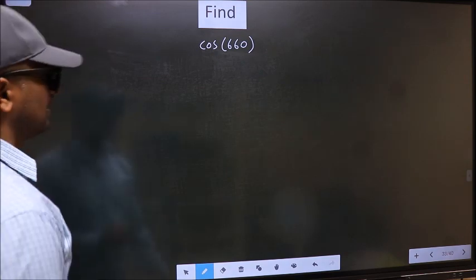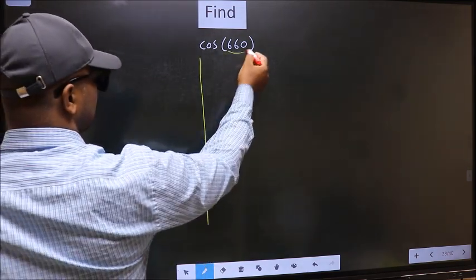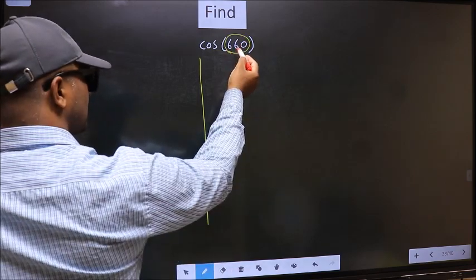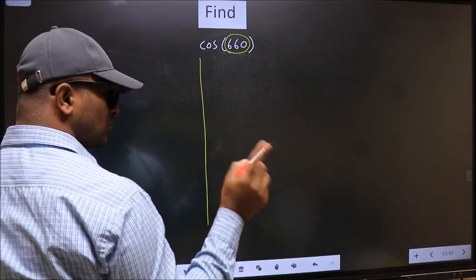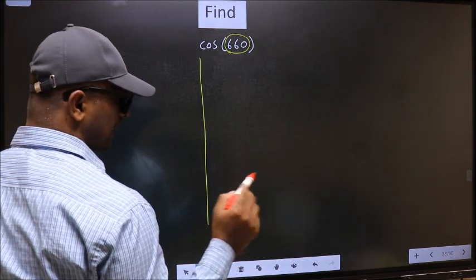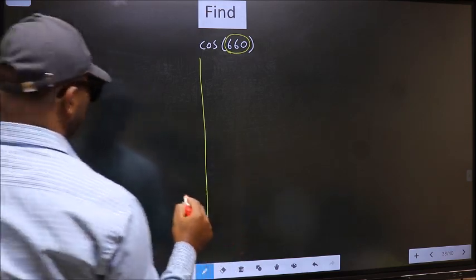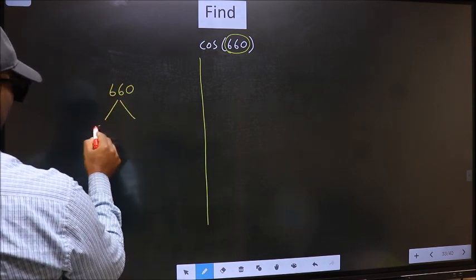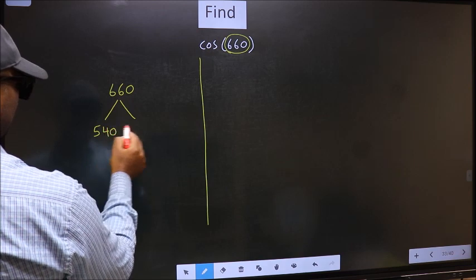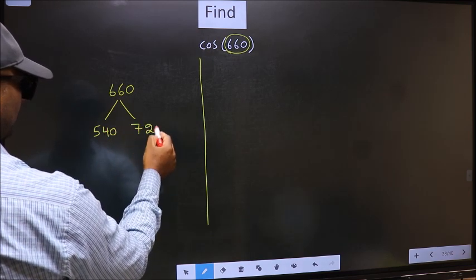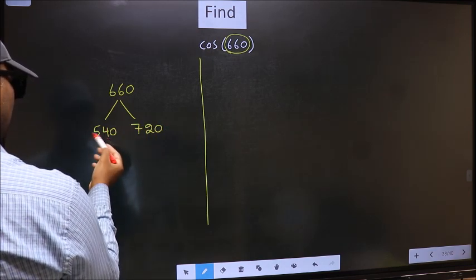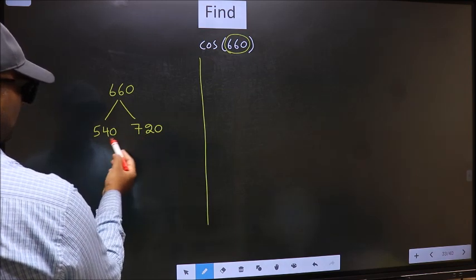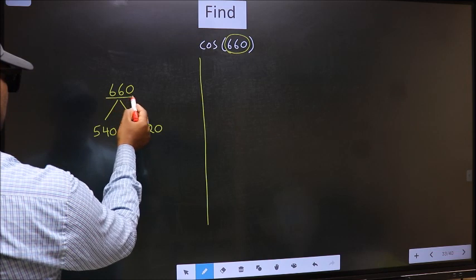Here we have 660. Now you should check, 660 lies between which two multiples of 180? What I mean is, 660 lies between 540 and 720. This is 180 into 3 and this is 180 into 4. Between these two numbers, 660 lies.